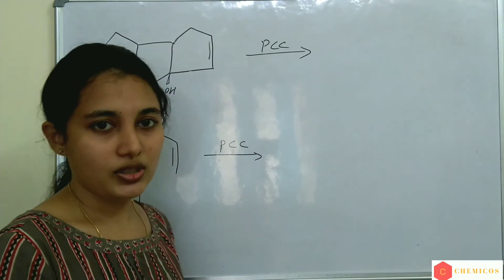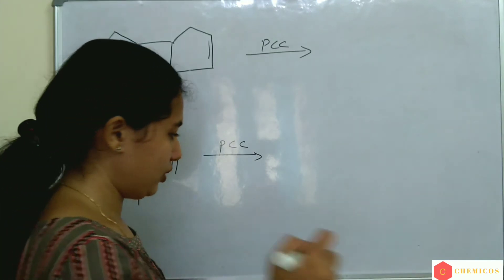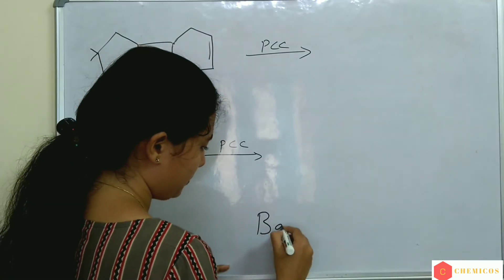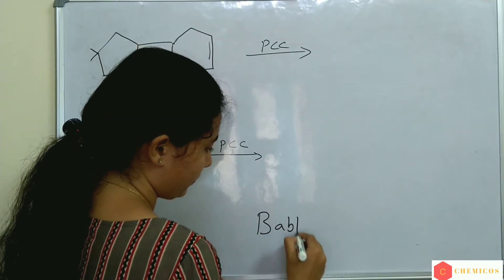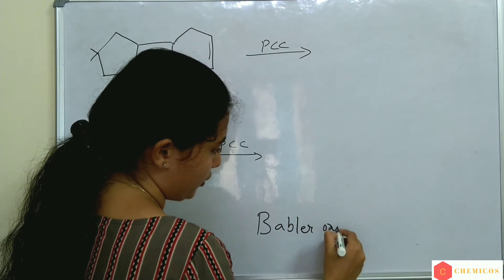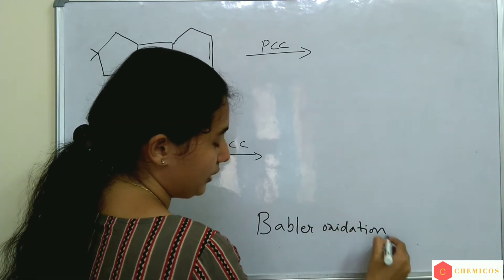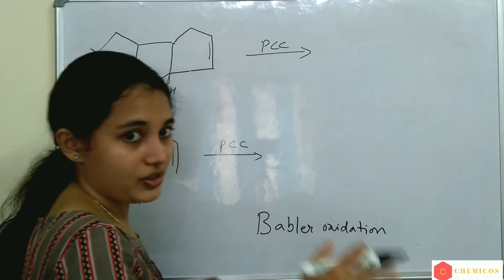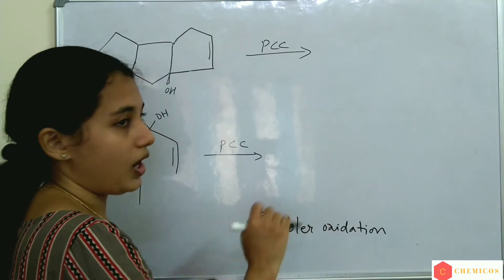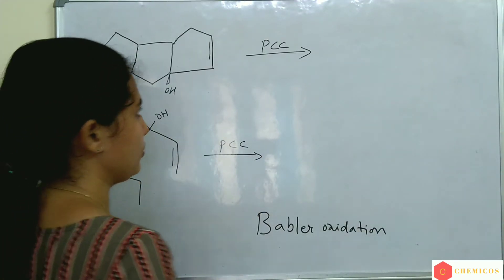This type of reaction is known as Babler oxidation. In Babler oxidation, an allylic tertiary alcohol is converted to an alpha-beta unsaturated ketone.